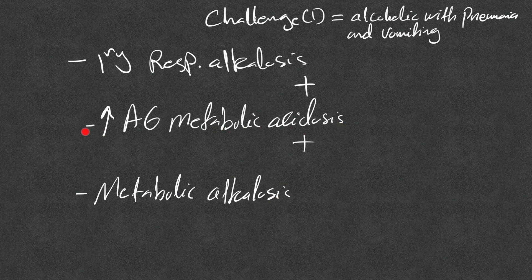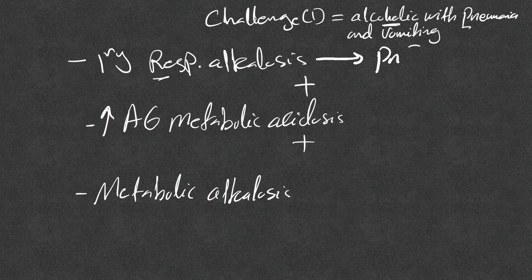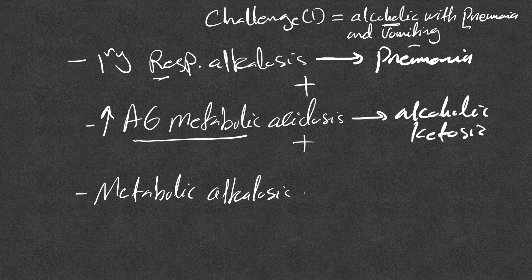The final analysis: primary respiratory alkalosis, high anion gap metabolic acidosis, and metabolic alkalosis — three acid-base disturbances coexisting. This patient was an alcoholic with pneumonia and vomiting. The respiratory alkalosis is explained by the pneumonia, the high anion gap metabolic acidosis by alcoholic ketosis, and the metabolic alkalosis by vomiting. This is a clear example that even a high pH does not rule out metabolic acidosis.